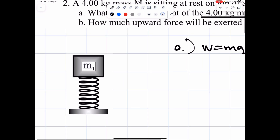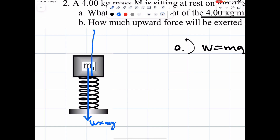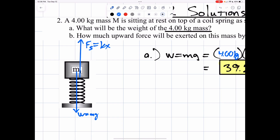Now on our diagram, let's remember what we have going on — we did this in pH number 21. We have the weight going down, which you just found, and you've got the spring force pushing up. Spring force equals k times x.